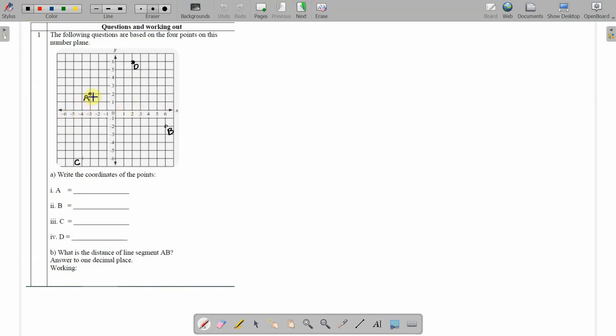Firstly, A is level with negative 3 on the X. Always do the X value first. Negative 3 on the X and 2 on the Y. B is level with 6 on the X and negative 2 on the Y. C is over here, so it's level with negative 4 on the X and negative 6 on the Y. And D is level with 2 on the X and 6 on the Y. Done.